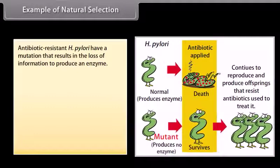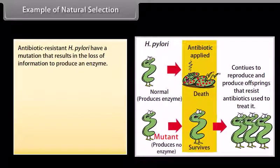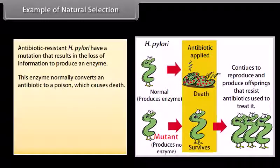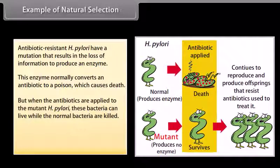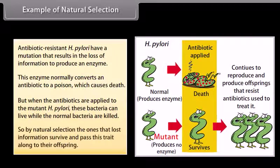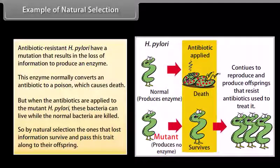Example of natural selection: antibiotic-resistant H. pylori have a mutation that results in the loss of information to produce an enzyme. This enzyme normally converts an antibiotic to a poison which causes death. But when antibiotics are applied to the mutant H. pylori, these bacteria can live while the normal bacteria are killed. So by natural selection, the one that lost information survives and passes this trait along to their offspring.